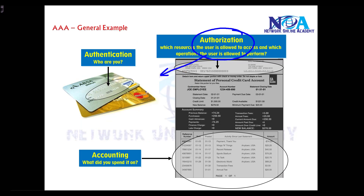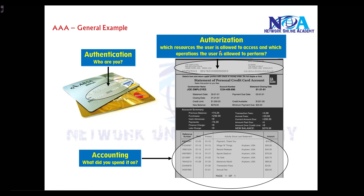Just like if you take a general example of your credit card — what is the maximum amount of transaction you can do? Maybe you have a limit of $800 and you cannot do more than that. So that's what authorization is: restricting the user, what he can do and what he cannot do.